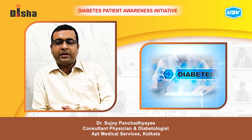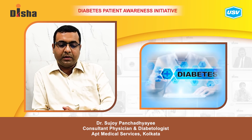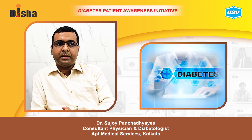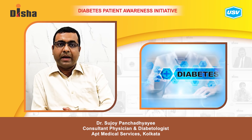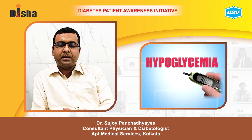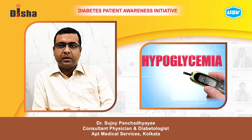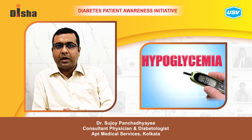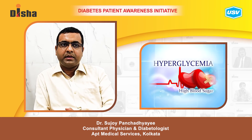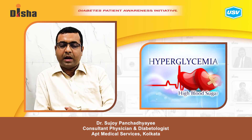I would like to tell something about diabetic emergency — what are the emergencies that can be seen in case of a diabetic patient? Diabetic emergency can be basically two types: one is due to hypoglycemia, meaning low blood sugar, and another is due to hyperglycemia, meaning high blood sugar.